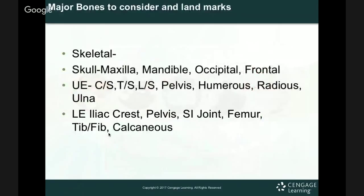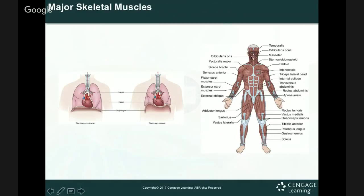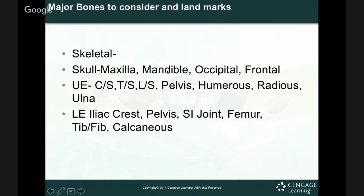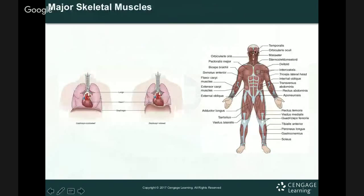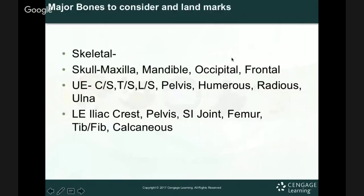Major bones and landmarks to know: skull, maxilla (the upper jaw), and mandible (the lower jaw). The frontal bone is at the forehead. Also occipital and parietal bones are part of the skull. For the spinal column: CS is cervical spine, TS is thoracic spine, LS is lumbar spine. Then the pelvis. Remember the radius rotates — making pronation and supination — while the ulna articulates with the humerus to make a hinge joint. The iliac crest on the pelvis and the SI joint — sacroiliac — which connects the sacrum and ilium.